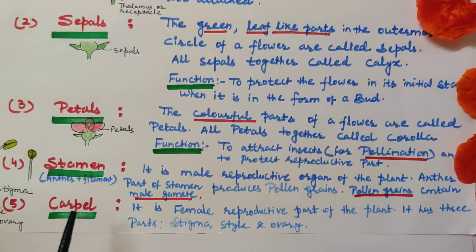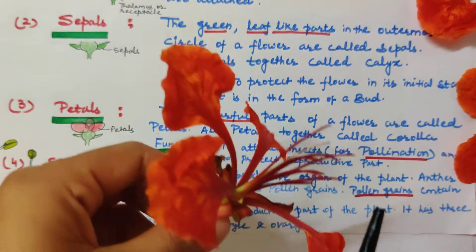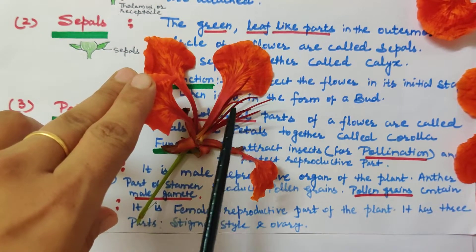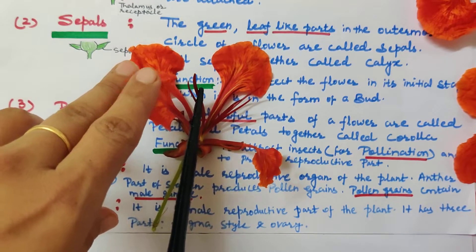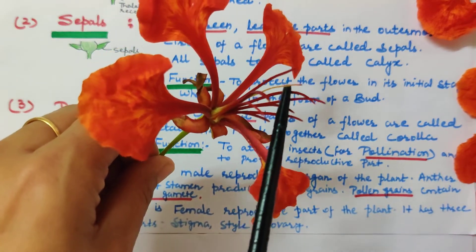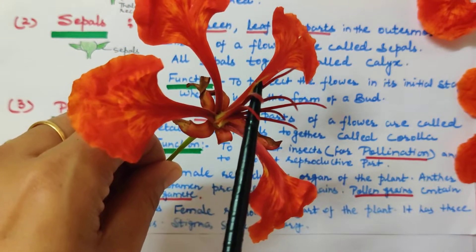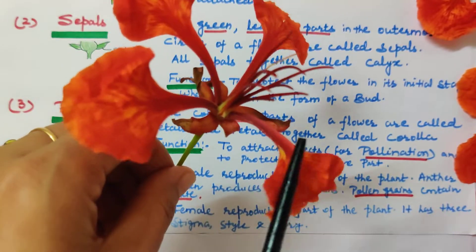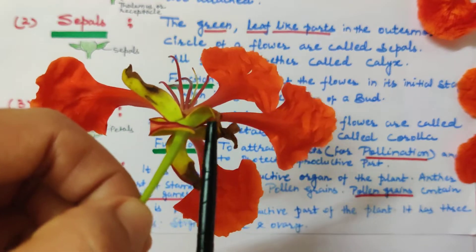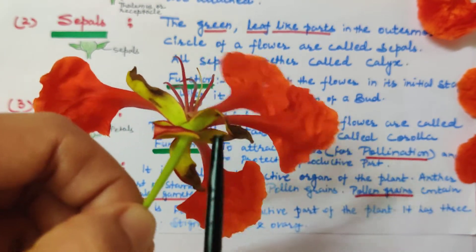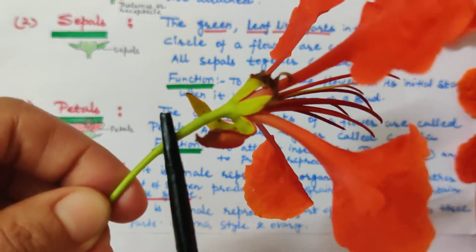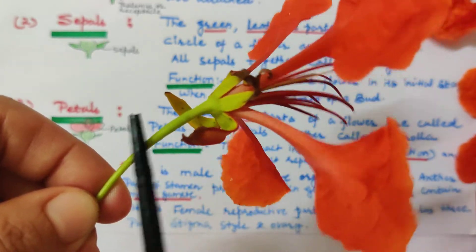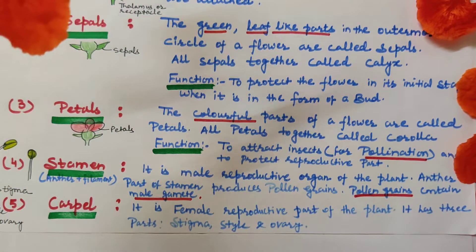Female gametes are present inside the ovary within the ovule. In this flower you can clearly see the stamens (male part), the middle part which is light in colour is the female part — pistil or carpel — and there are petals, and the green leafy structures are called sepals. The flower stalk is called pedicel. This is all about the structure and parts of a flower.